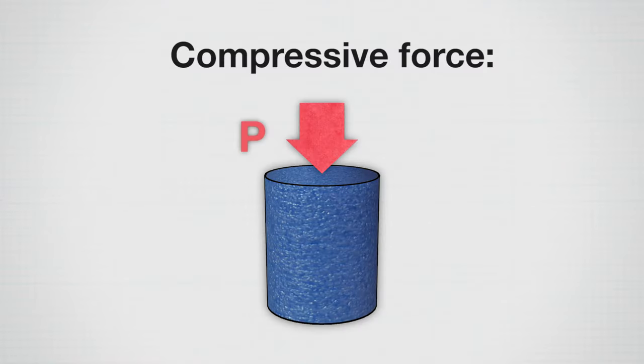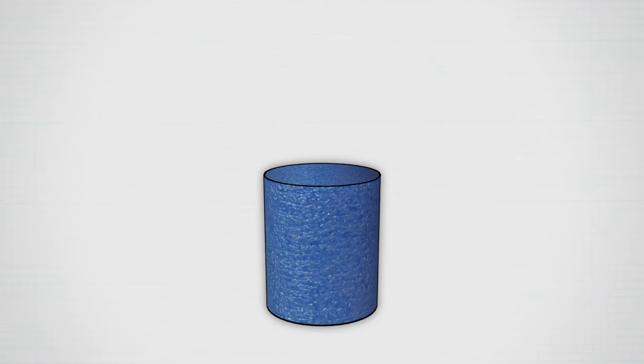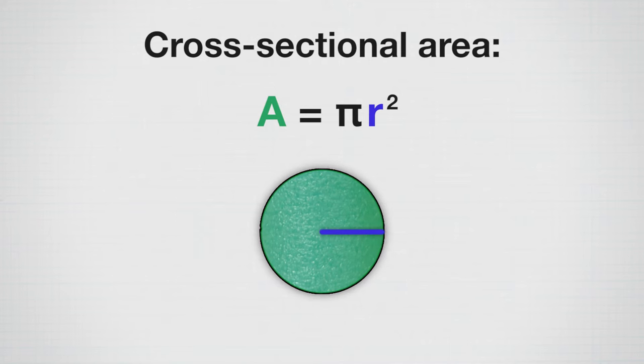If we use this blue foam column as an example, when I push on the top, that's applying a compressive force. I usually denote that with a capital P and a downward arrow. That's my force at the top, and that force ends up getting distributed throughout the column and over the column area as it gets internal stresses. Since this is a column with a circular cross section, that cross sectional area, which I denote as a capital A, will be pi times this radius squared. So that's easily calculatable.